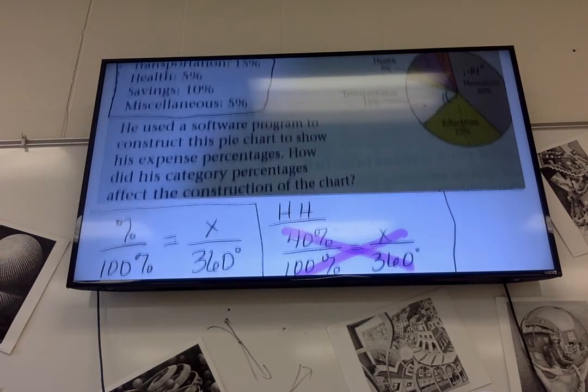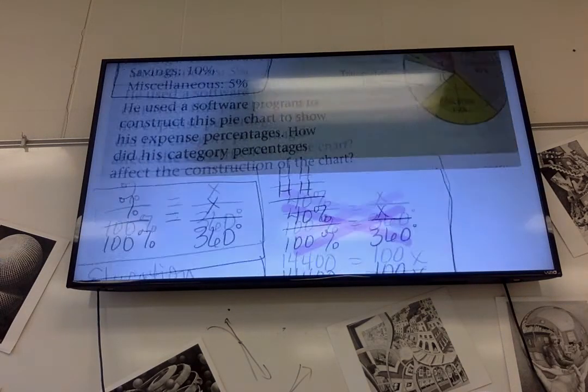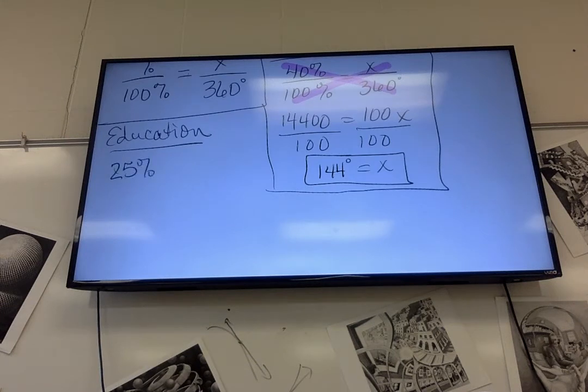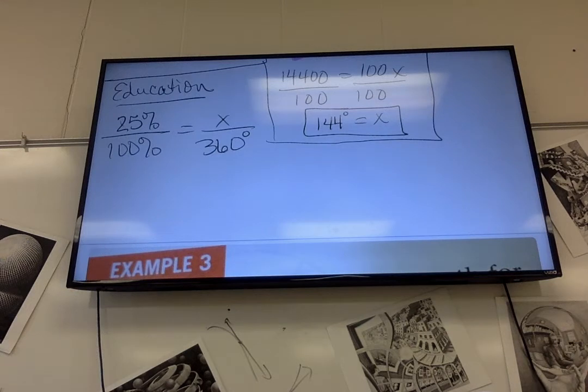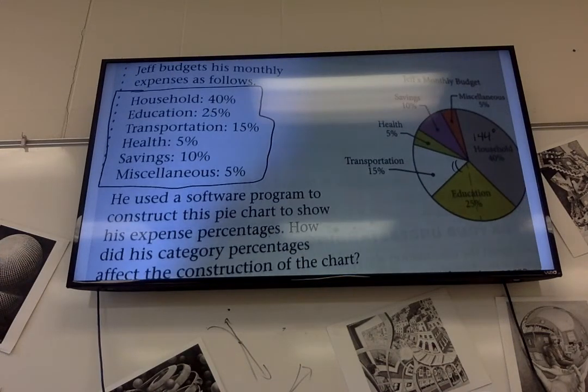And then we have education. That's 25% over 100, that's x over 360. That's exactly 90. So we should be able to see that education, yeah, looks like it's a right angle there. It's a quarter of the circle.